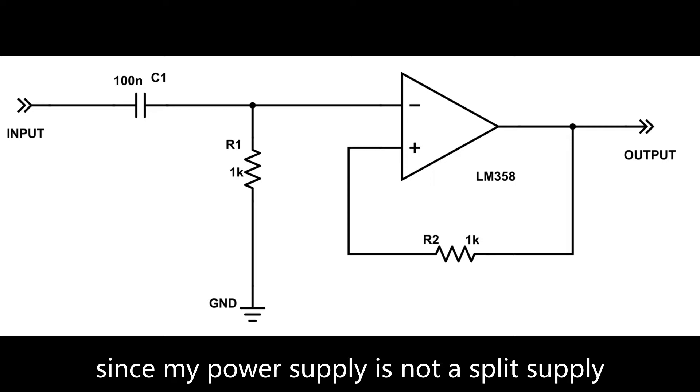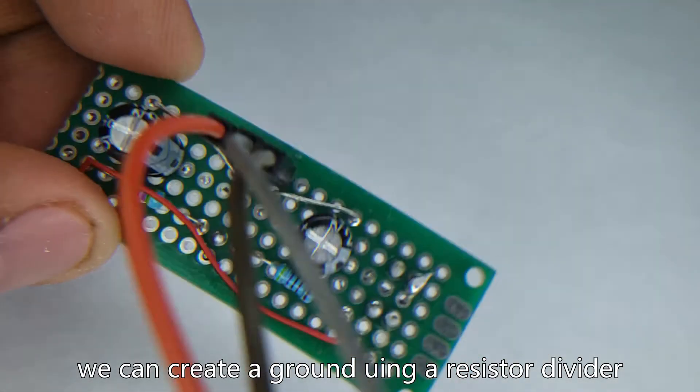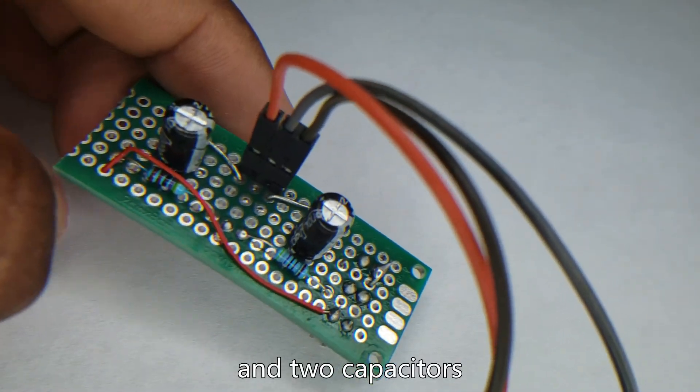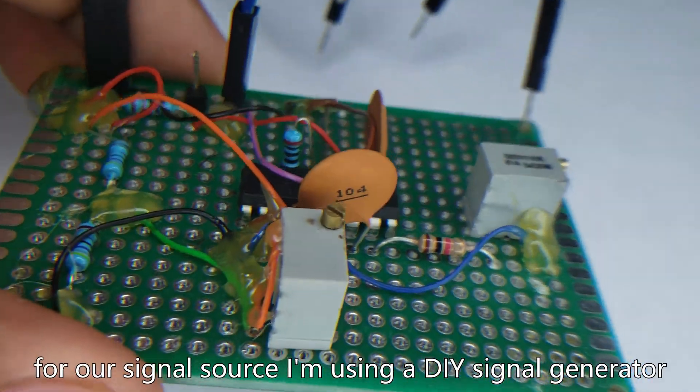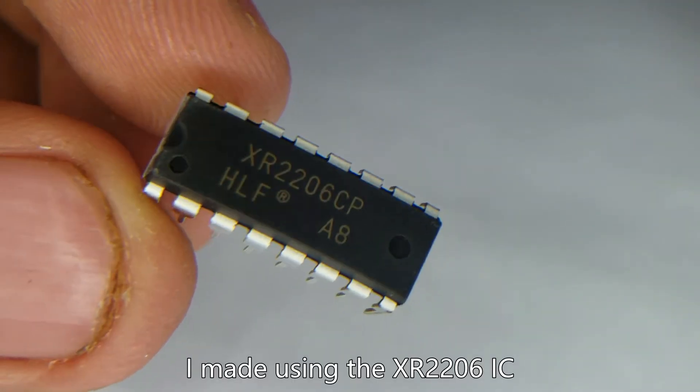Since my power supply is not a split supply, we create a ground using a resistor divider and two capacitors. For our signal source, I am using a DIY signal generator I made using the XR2206 IC.